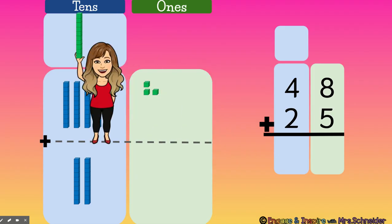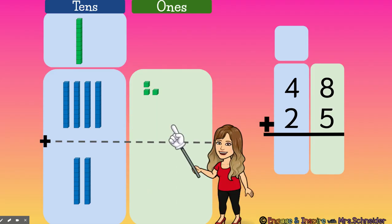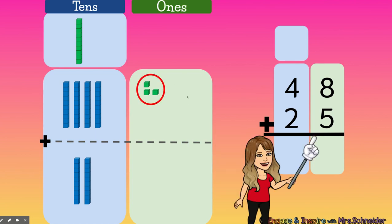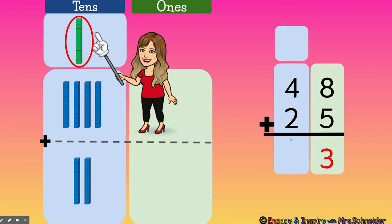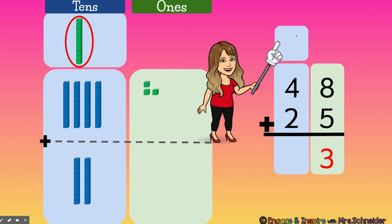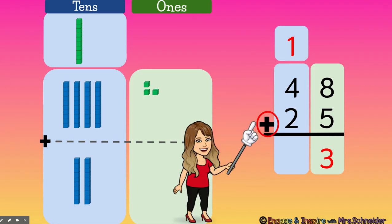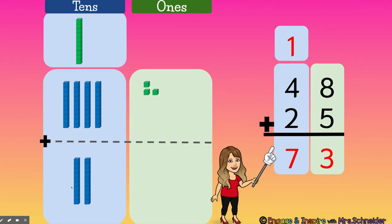I'm going to carry that 10 over to the tens place. I have three ones left. After I regrouped I had three ones left, so I'm going to write a three in my ones place. But eight plus five is not three — it's 13. So I have to remember that I carried one 10 over to the tens place, and I'm going to write one 10 over the tens place. Now I'm going to add all my tens together: one 10 plus four tens plus two tens equals seven tens. 48 plus 25 equals 73.